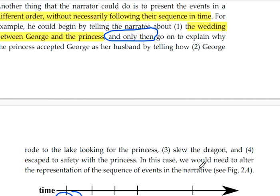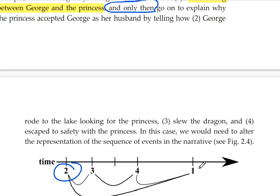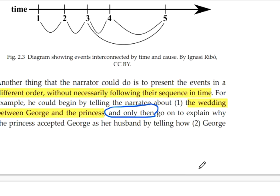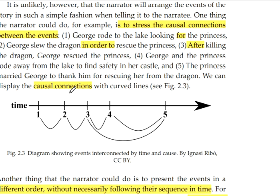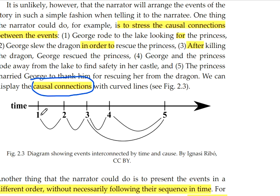In simple terms: first, we have events represented horizontally without causal connections. Second, actions are connected using causal connections — we know the relationship between events using connectors such as 'after,' 'in order to,' 'for,' etc.